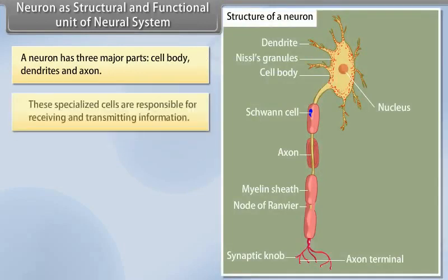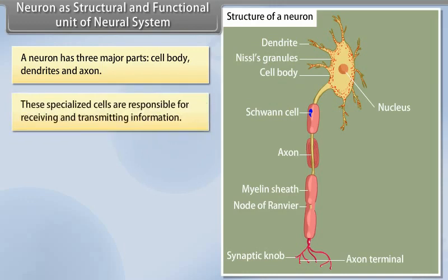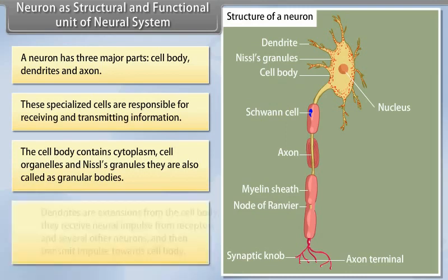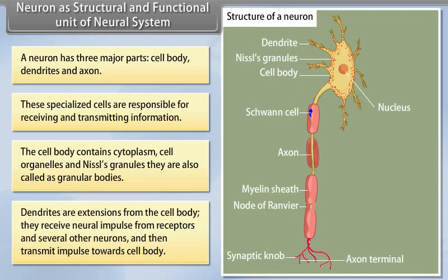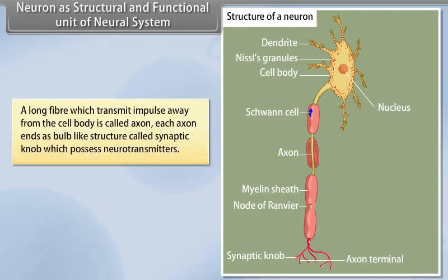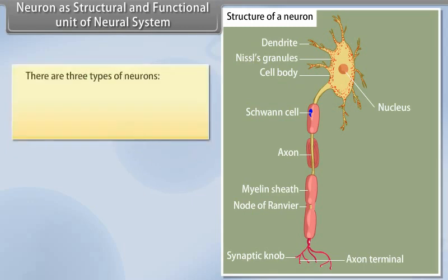Neuron as structural and functional unit of neural system. A neuron has three major parts: cell body, dendrites, and axon. These specialized cells are responsible for receiving and transmitting information. The cell body contains cytoplasm, cell organelles, and Nissl's granules. Dendrites are extensions from the cell body. They receive neural impulses from receptors and several other neurons and then transmit impulses towards cell body. A long fiber which transmits impulse away from the cell body is called axon. Each axon ends as a bulb-like structure called synaptic knob which possesses neurotransmitters.